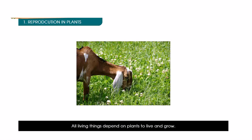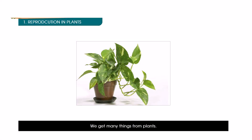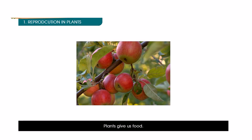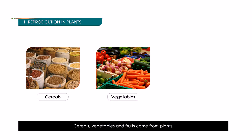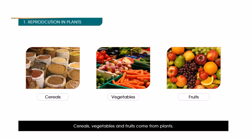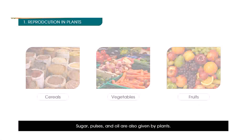All living things depend on plants to live and grow. We get many things from plants. Plants give us food — food such as cereals, vegetables, and fruits come from plants.